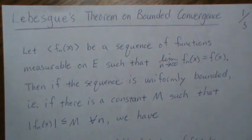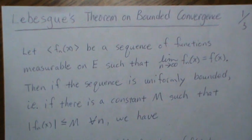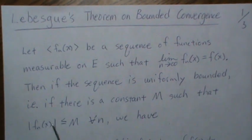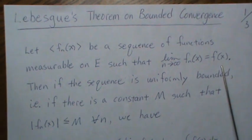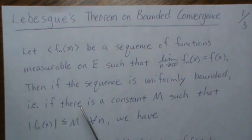It says a sequence of functions, say f_n, all measurable on a set E and that's Lebesgue measurable, such that the limit of these f_n goes to f.